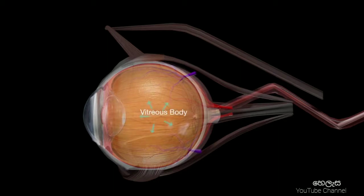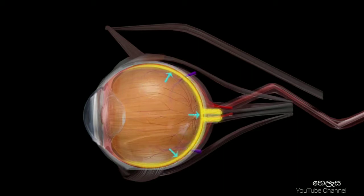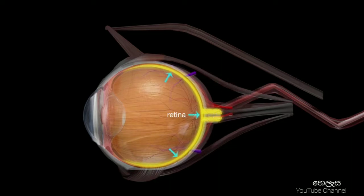Behind the lens is the vitreous body, filled with a vitreous gel that allows the eyeball to maintain its round shape. At the very back is the retina — the layer that has all the light receptors. Here your eye perceives the light information that is then sent down the optic nerve to the brain. In the very center, just above the optic nerve, you have the macula, the area with the most light receptors that allows you to see a sharp and clear image in your central vision.